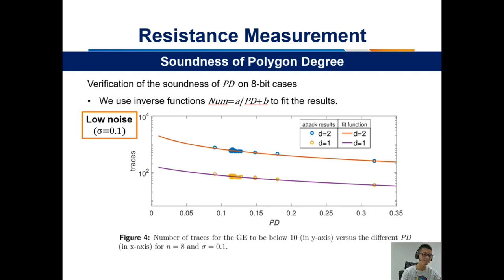For the 8-bit simulation, there are 254 monomials and a total of 34 classes. We use inverse functions to represent these results. It can be seen that the results match the PD values as well.